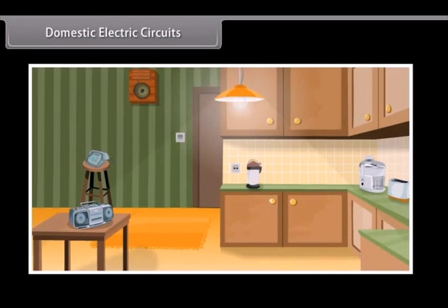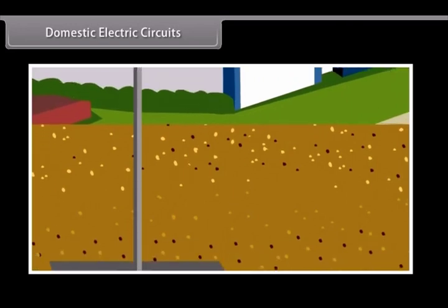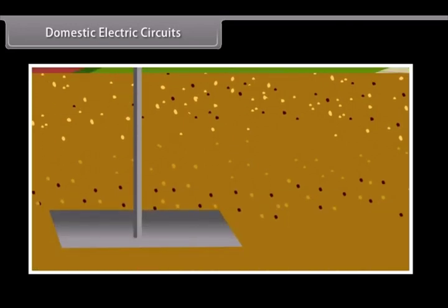There are different circuits used for different appliances being used in the house. The earth wire is connected to a metal plate deep into the earth to avoid receiving any severe shock in case of any leakage of current while using the appliances.